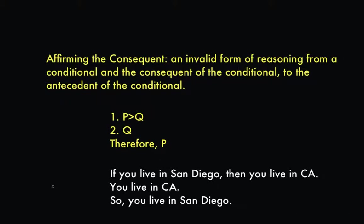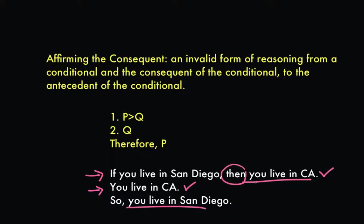Now let's take a look at an example of affirming the consequent. Consider the following reasoning: if you live in San Diego, then you live in California. You live in California, therefore you live in San Diego. This is a form of affirming the consequent because we have a conditional, and as our second premise we have the consequent of that conditional — the 'then' part, which is 'you live in California' — and we've tried to deduce the antecedent, 'you live in San Diego.'